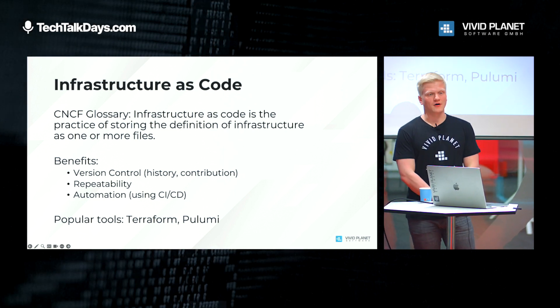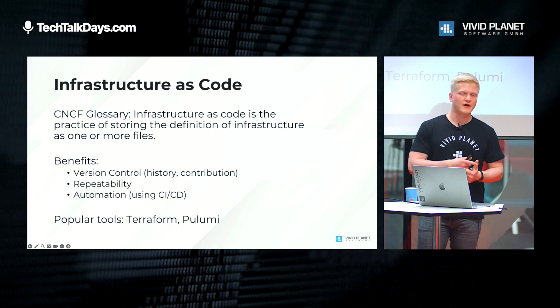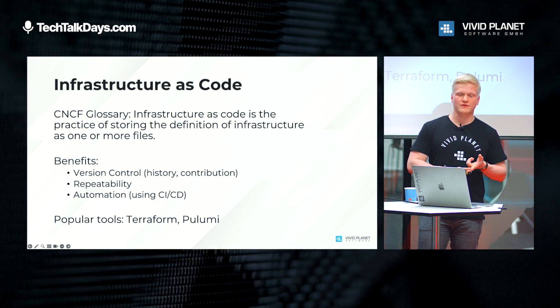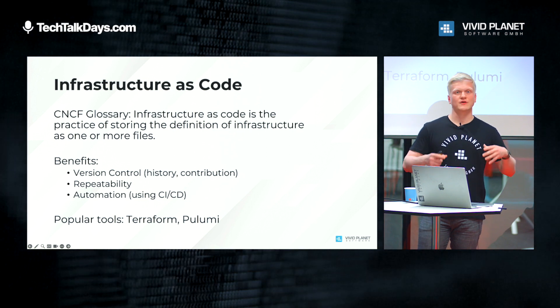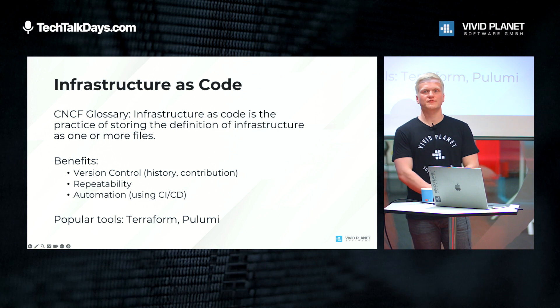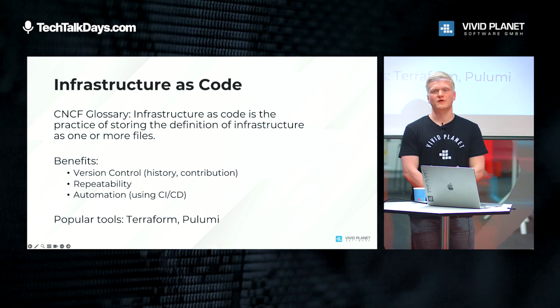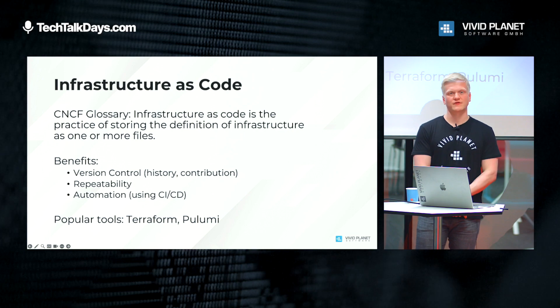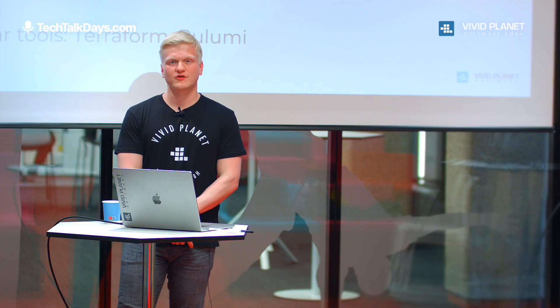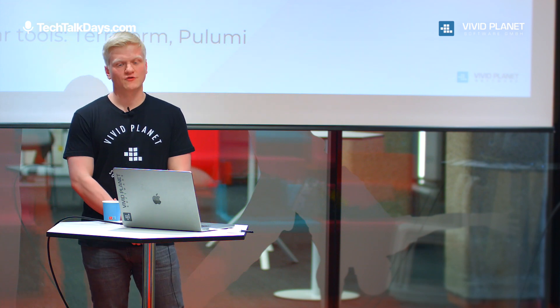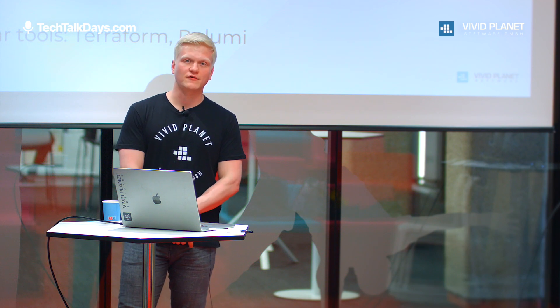With infrastructure as code you can use your usual workflow — the same one you use for source code. You have your history and can use all the contribution functionality version control systems offer. If the configuration is in files, you can tear down your infrastructure and bring it back up again, or spin up another environment by copying the config files, which speeds up the process and is less error-prone. You can also use existing CI/CD pipelines to deploy the infrastructure as well. Popular tools include Terraform and Pulumi — we chose Terraform.